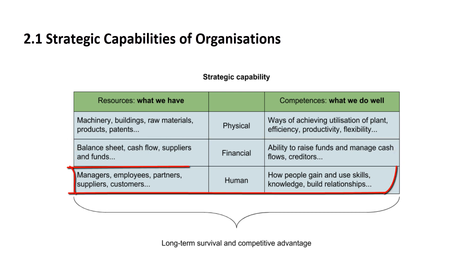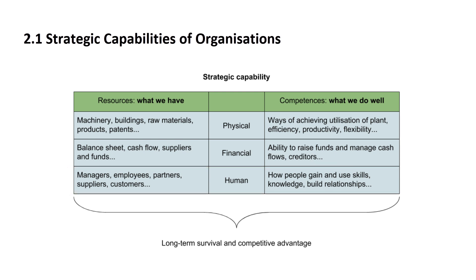Finally, we have human strategic capabilities. The resources here are managers, employees, partners, suppliers, and customers. The competency side is about how people gain and use skills, knowledge, and build relationships. All of this adds up to long-term survival and competitive advantage.